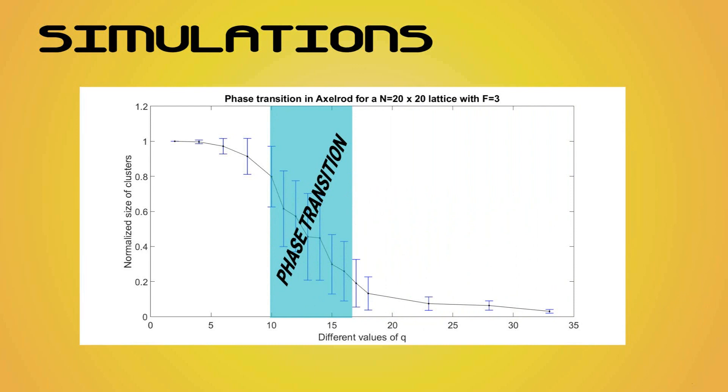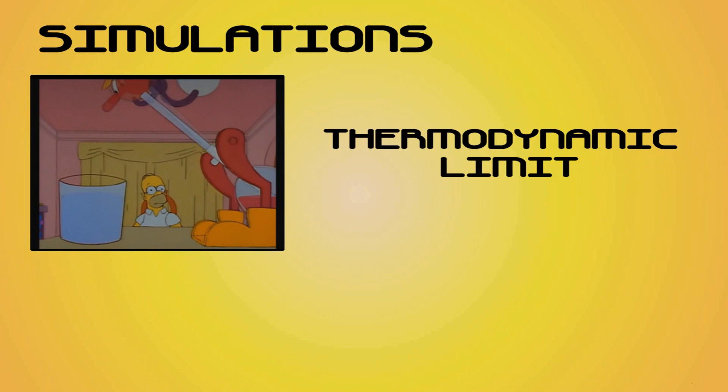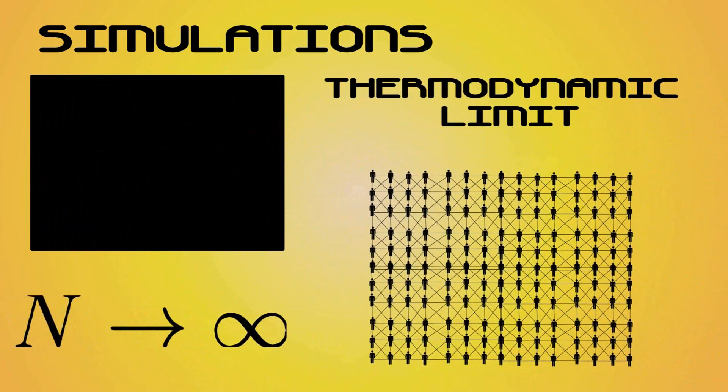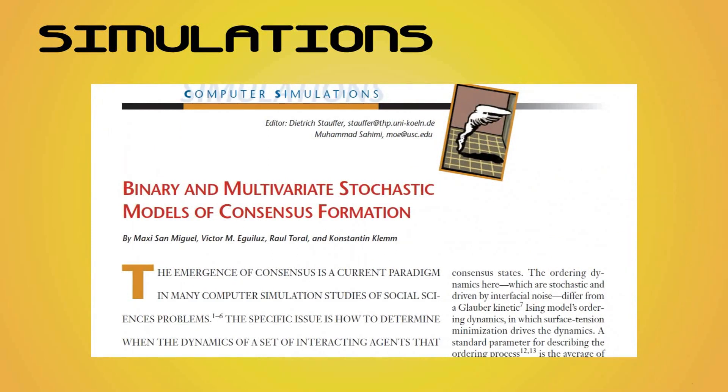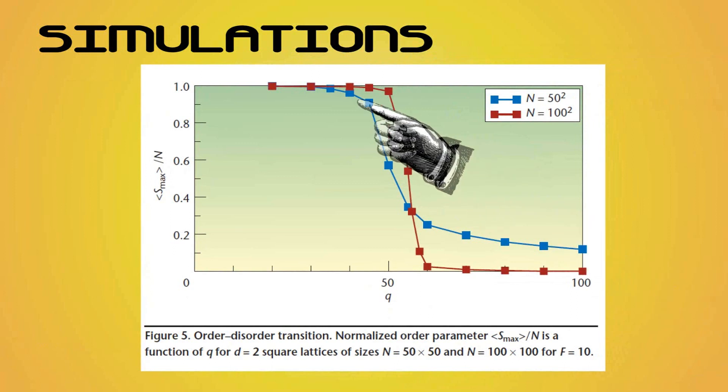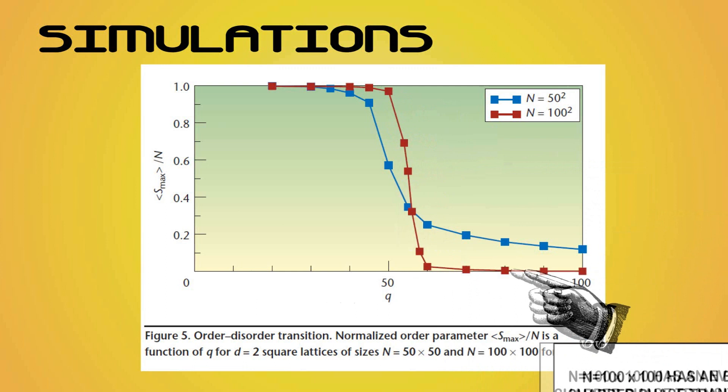The phase transition is continuous because we are working on a finite-sized system, a society of only 20 times 20 individuals. Statistical physicists usually deal with phase transition in what they call thermodynamic limit. This implies supposing n going up to infinity. In this article, Binary and Multivariate Stochastic Models of Consensus Formation by Maxi San Miguel, Victor Eguiluz, Raul Toral, and Constantin Klem, there are graphs for different values of n. Observe that when n grows bigger, the transition becomes sharper. In the limit, it would be a discontinuous phase transition.